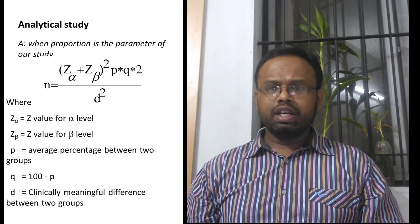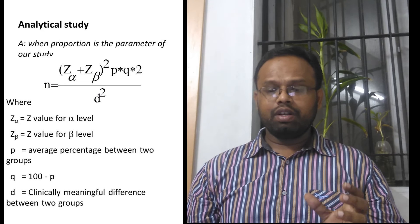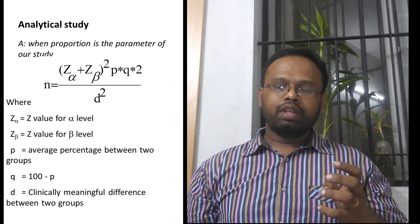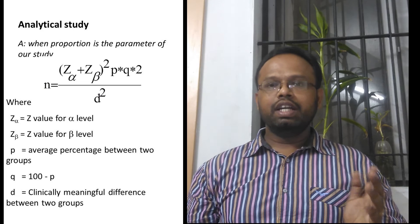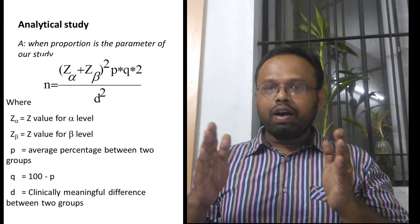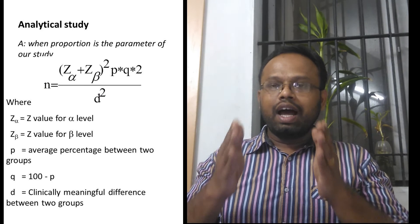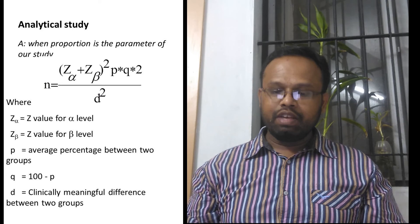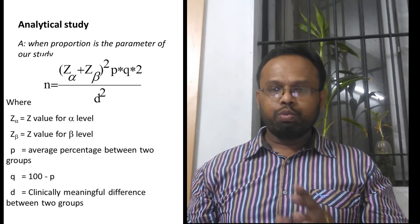Here we include z_alpha and z_beta, which are constants based on your chosen alpha and beta levels. The prevalence to consider is the average of the two proportions — you take the average of the two proportions and substitute it as p, while q is again 100 minus p. The value d is the clinically meaningful difference between the groups.